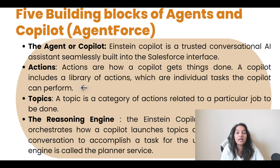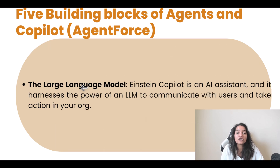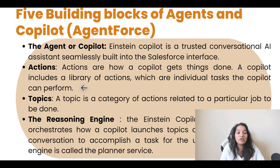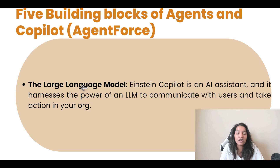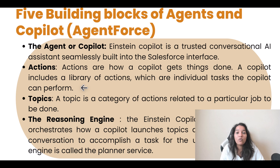This reasoning engine is called the Planner Service. The fifth building block is the Large Language Model. Einstein Copilot harnesses the power of an LLM to communicate with users and take action in your org - it understands human language and performs tasks for you. So the five building blocks are: Agent, Actions, Topics, the Reasoning Engine, and the Large Language Model. The reasoning engine orchestrates which action to take and what topic it belongs to - all the orchestration of launching topics and actions during a conversation happens behind the scenes.